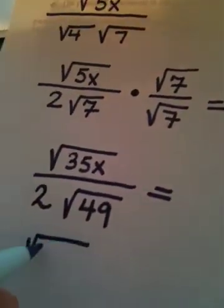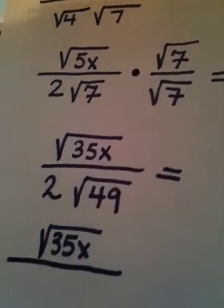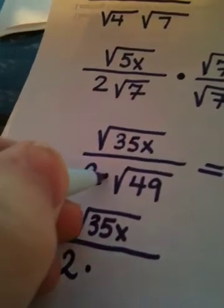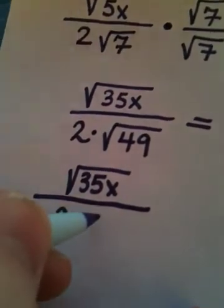So I have the square root of 35x on top. Okay, look in the denominator. 2 is here, right? This is a times. And what is the square root of 49? Hopefully 7.